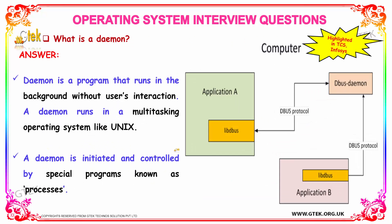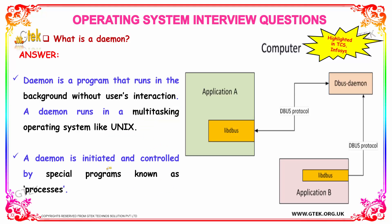What is a daemon? A daemon is a program that runs in the background without the user's interaction. Daemons usually run in multitasking operating systems like Unix. A daemon is initiated and controlled by a special program called a process. So daemons run in the background using processes.